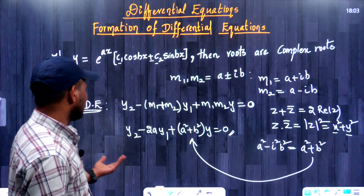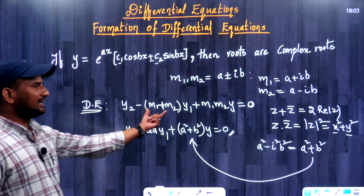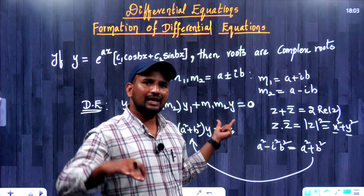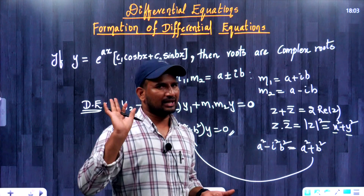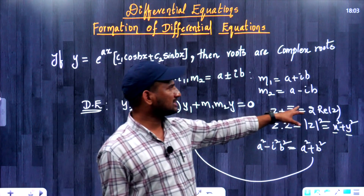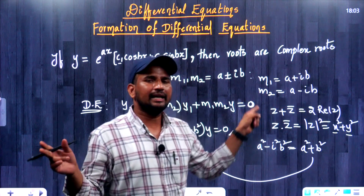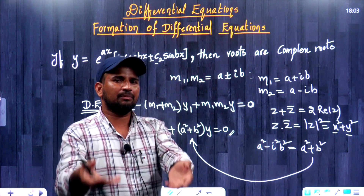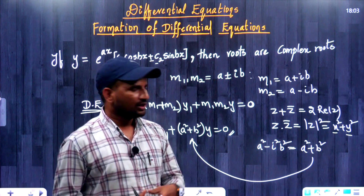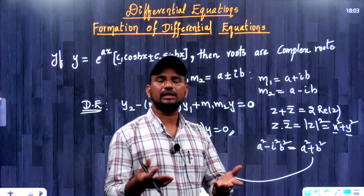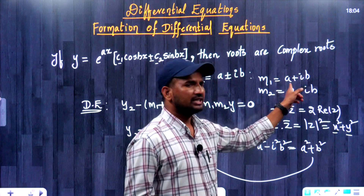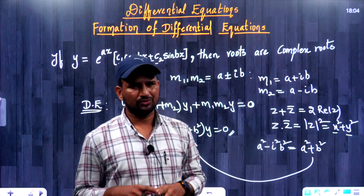Let us decode the problem here. Summation of the roots gives 2 times the real part. Product of the roots gives real part squared plus imaginary part squared. This complex number concept is quite easy. When you multiply two conjugates, you get real part squared plus imaginary part squared. AB values — fix them, and you can work through these problems step by step.